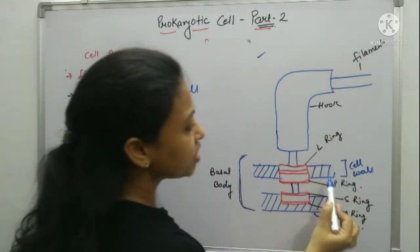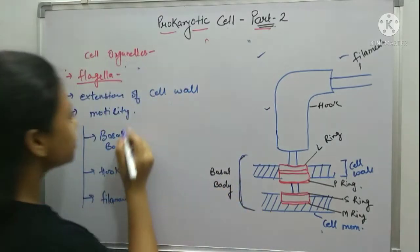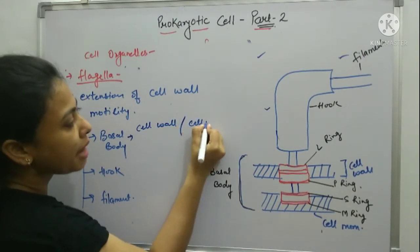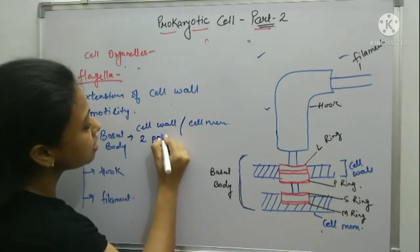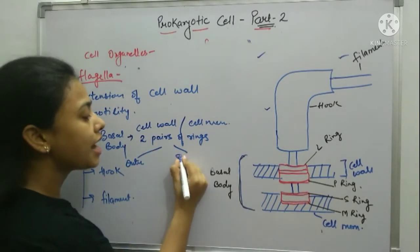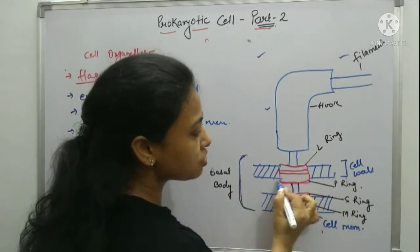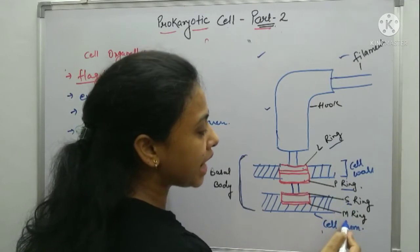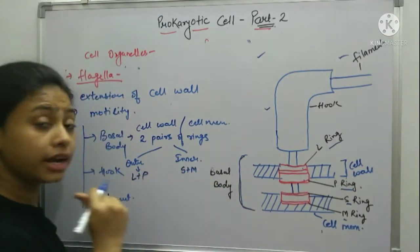As you can see, this is the cell wall and this is the cell membrane. This is the hook and the filament. The basal body is basically embedded into both the cell wall and cell membrane. It has two pairs of rings divided into outer and inner. The outer ring consists of the L ring and the P ring, and the inner ring consists of the S ring and M ring.